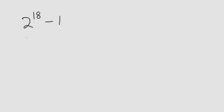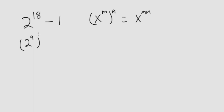Hello. In this problem we're asked to find the value of 2 to the 18 minus 1 without the use of a calculator. We can approach this in a number of ways. One way would be using the rule that x to the m times n is equal to x to the m, all to the n. So this can be written as 2 to the 9, all squared.